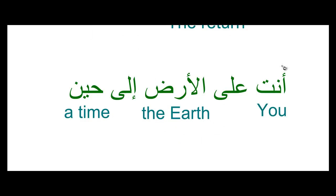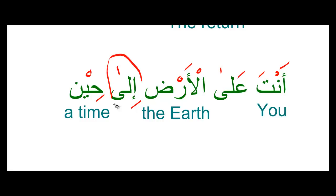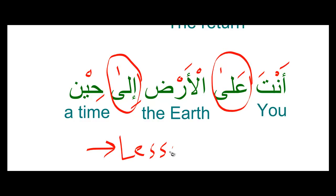Finally, I have a challenge question for you. I'll give you some of the words and you have to give me the meaning. The sentence is: anta ala al-ardi ila hin. Anta means 'you,' al-ard means 'the earth,' and hin means 'a time.' Translate the two halves and the entire sentence, and post your answer with commentary at iarabic.tv under lesson 8 in the comments section.